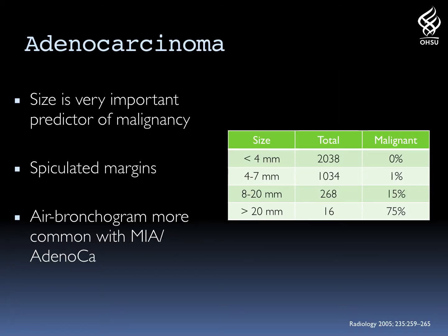When thinking about pulmonary nodules in the context of adenocarcinoma, size is a very important predictor of malignancy. Lung nodules up to 7 mm in size only bear a risk of 1% to be malignant. However, if that same nodule reaches a size of 20 mm, malignancy is likely in 3 out of 4 cases. Air bronchograms are more commonly associated with minimally invasive adenocarcinomas. They often have spiculated margins.